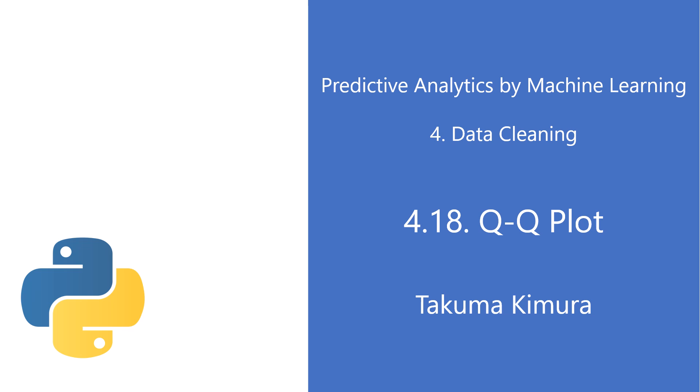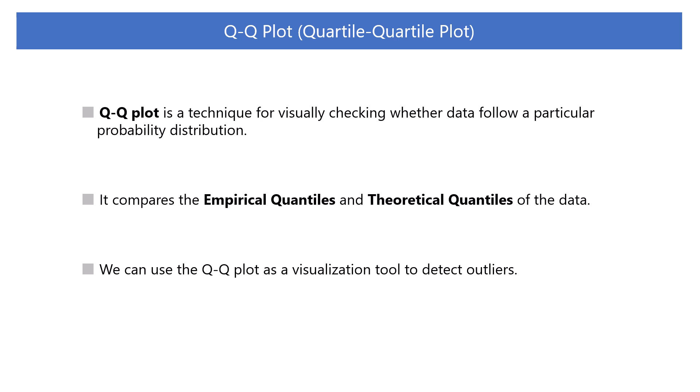Chapter 4, Section 18: Q-Q Plot. The Q-Q plot is a technique for visually checking whether data follow a particular probability distribution. The plot compares observed quantiles called empirical quantiles and theoretical quantiles of the data. We can use the Q-Q plot as a visualization tool to detect outliers.